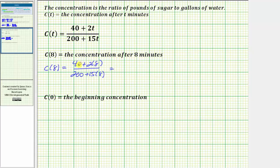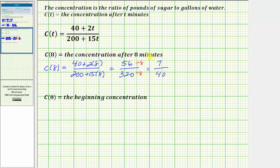Two times eight equals 16; 40 plus 16 equals 56. Fifteen times eight equals 120; 200 plus 120 equals 320. This is the ratio of pounds of sugar per gallons of water, so after eight minutes there are 56 pounds of sugar in a total of 320 gallons. The greatest common factor between 56 and 320 is eight; dividing both by eight gives 7 over 40. So after eight minutes, the concentration is seven pounds of sugar per 40 gallons of water.